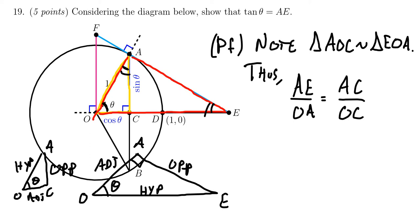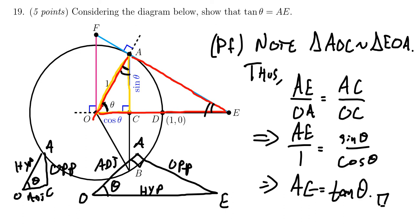So now using the diagram, what can we do here? AE, we don't know. OA is a radius of the unit circle. So that is one. What about AC? AC is equal to sine of theta, and then OC is equal to cosine of theta. And so simplifying that, we end up with AE is equal to sine theta over cosine theta, which is tangent theta. And so therefore, we've now proven the statement that AE is equal to tangent of theta.